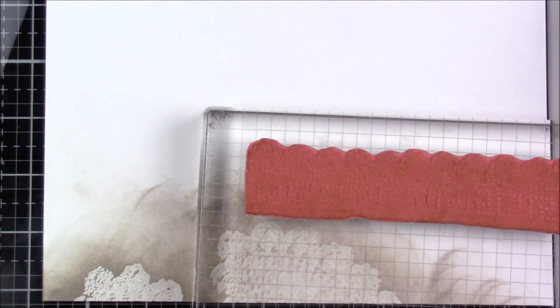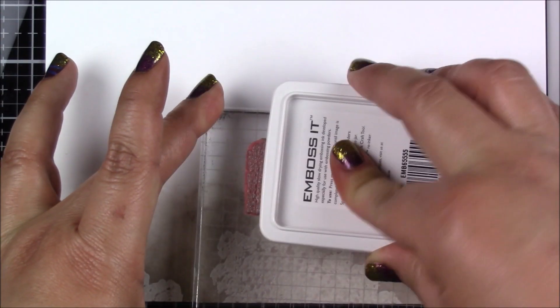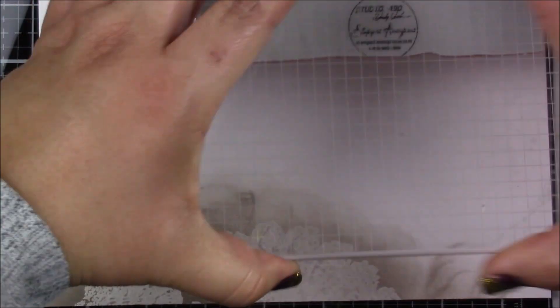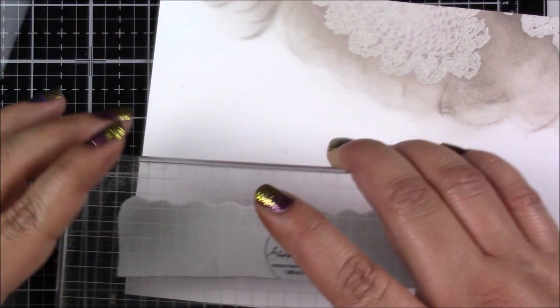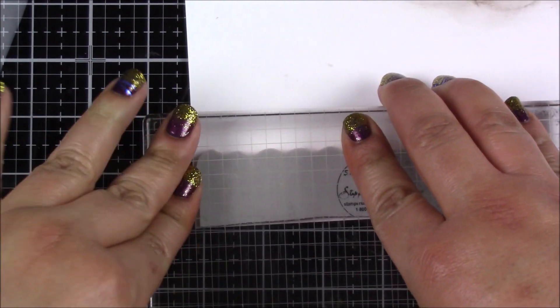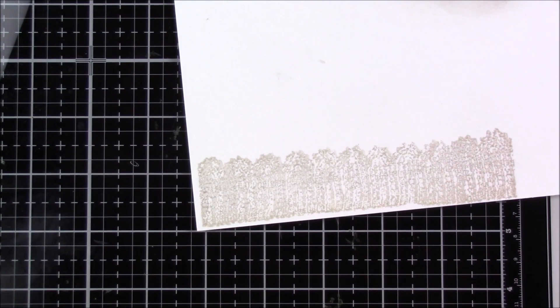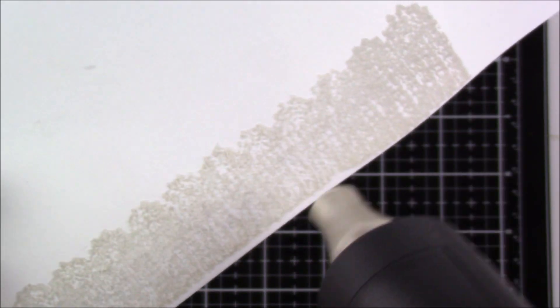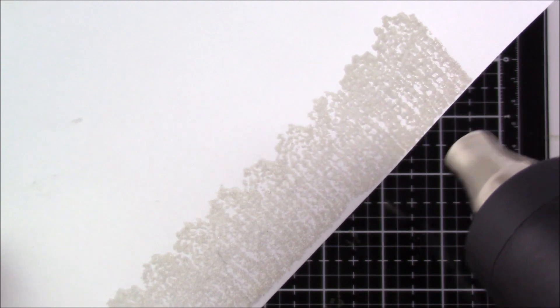Next I will stamp two of these images with the other large stamp in the set, and I will make some embellishments out of these images. The first one I do on Neenah cardstock and I emboss it with the gray tint embossing ink with clear embossing powder.